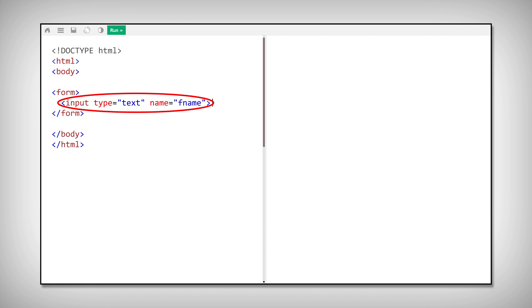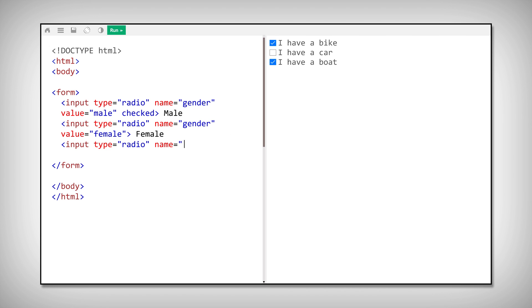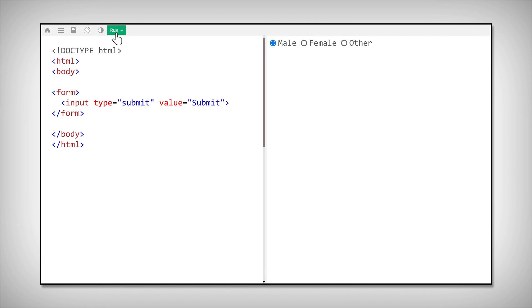The input element can be displayed in several different ways, depending on its type attribute. We have text fields, check boxes, radio buttons, submit buttons, etc.